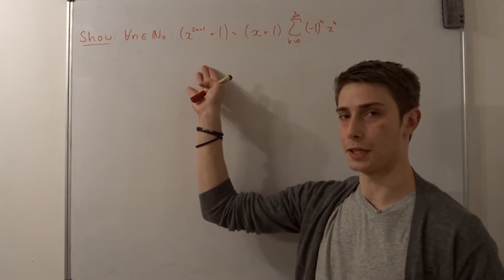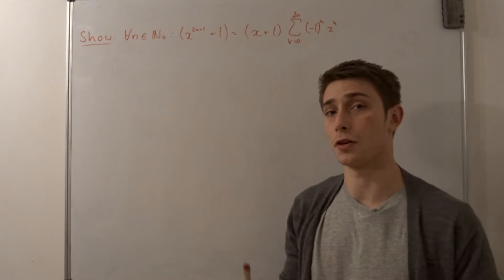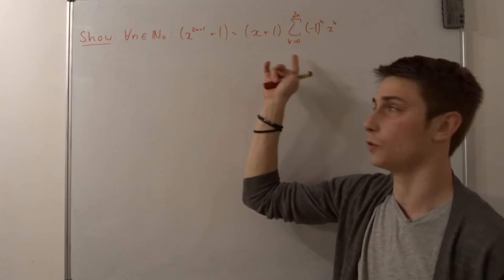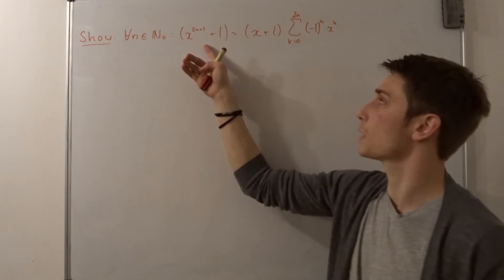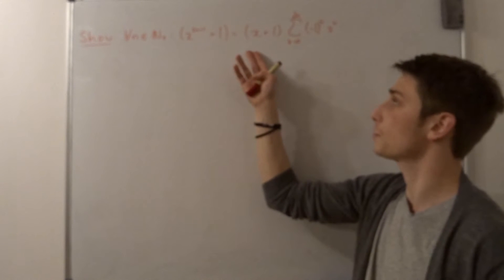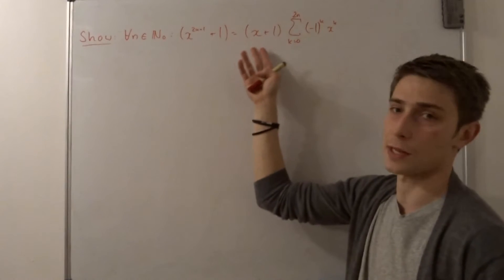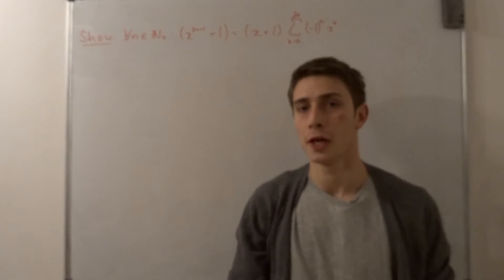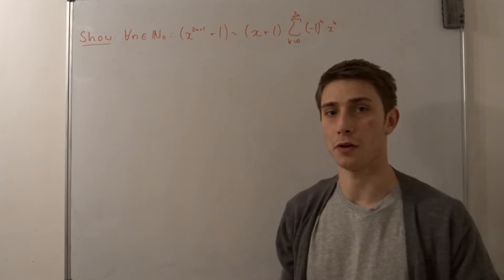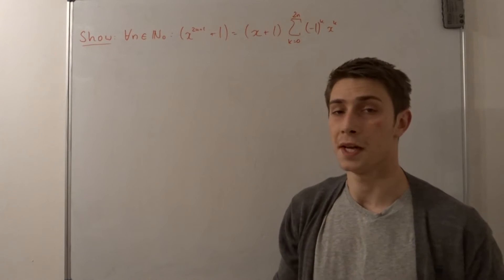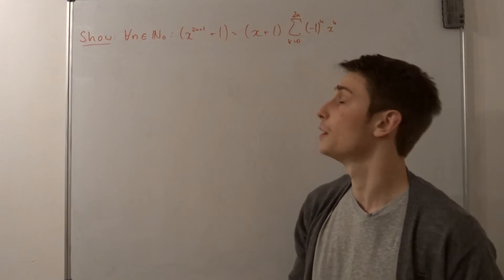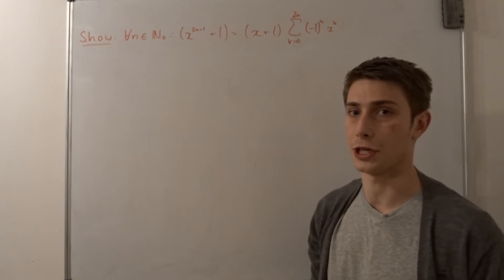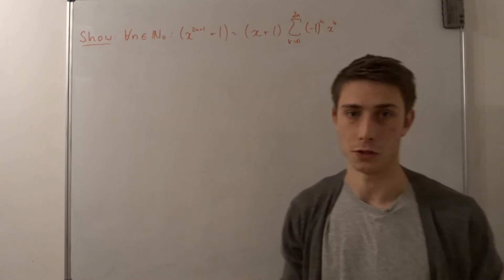That's the identity right here. We want to show for all n element of the natural numbers including 0 that this identity holds. So that means x to some odd power plus 1 can always be factorized into x plus 1 times a sum. I'm doing a series on the integrals of the form 1 over x to the nth power plus 1, so every time I encounter an odd n I'm going to use this to factorize the whole expression.